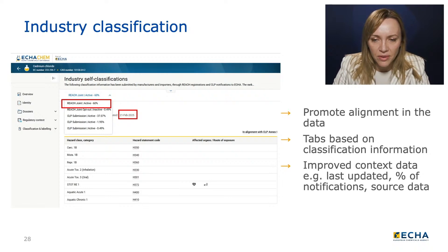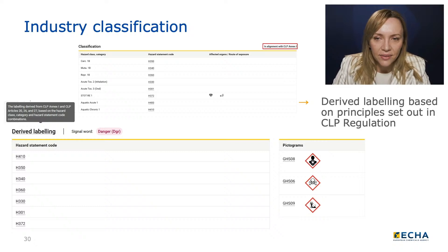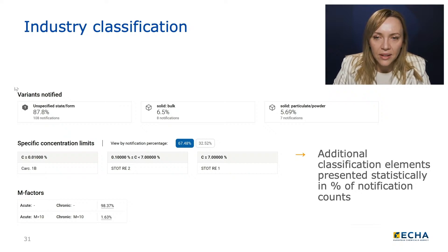Each separate classification from the drop-down list corresponds to a distinct classification. These classifications are ranked according to their source — REACH registrations or CLP notifications — the status, which could be active or inactive, and the last update date. In case of more than one classification per substance, the sorting is based on classification alignment: how widely the classification is used, the highest-ranked source being REACH joint submission, the highest-ranked status being active, and the last update date. When clicking on the icons, you will see information on the affected organs and routes of exposure. Above the classification table, you can see if the submitted classification elements align with CLP Annex 1, ensuring consistency between the hazard category and statement. Based on this alignment, the derived labeling as foreseen by CLP articles is displayed. Additional classification details, including variance, specific concentration limits, and M-factors, are presented as percentages to show the proportion of submissions containing this information.